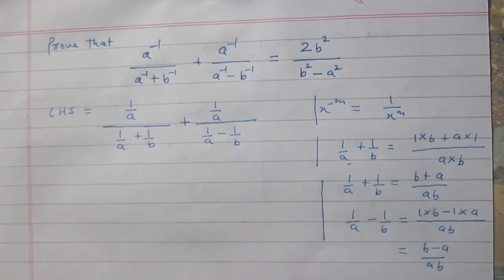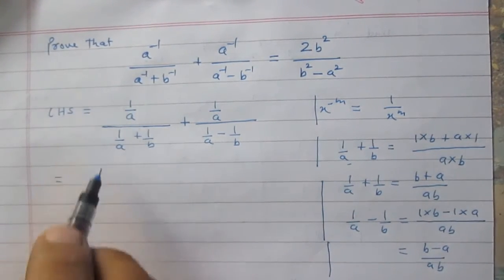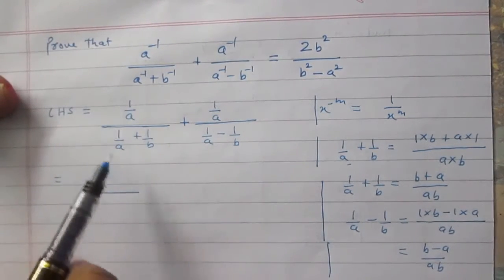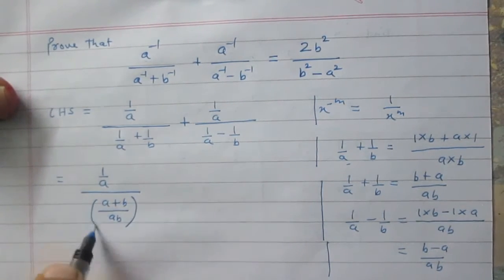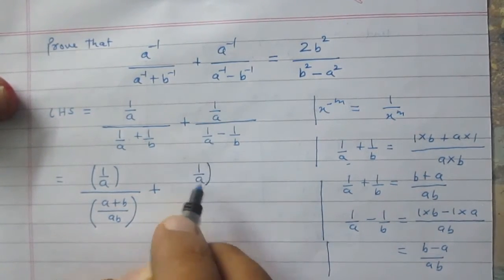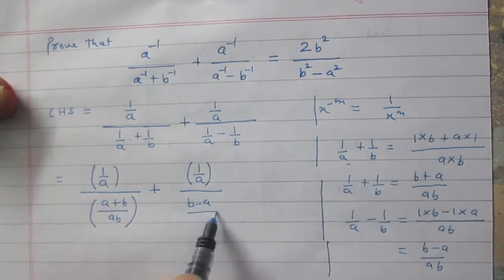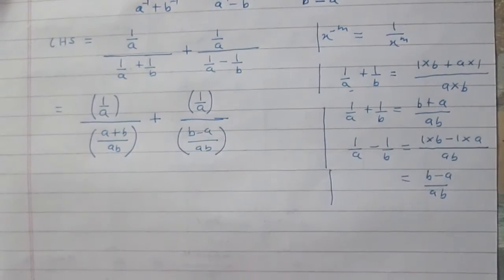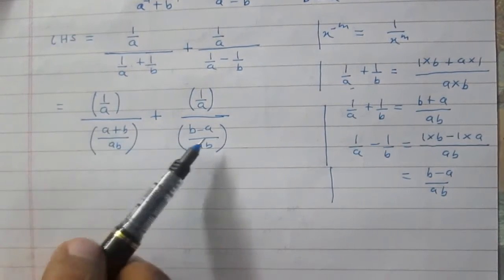After substituting these values, we get 1 upon a in the numerator, and in the denominator we have a plus b divided by ab. Then plus 1 upon a for the numerator of the second part, and b minus a upon ab as the denominator of the second part. We see that there is a fraction in which both numerator and denominator are fractions.